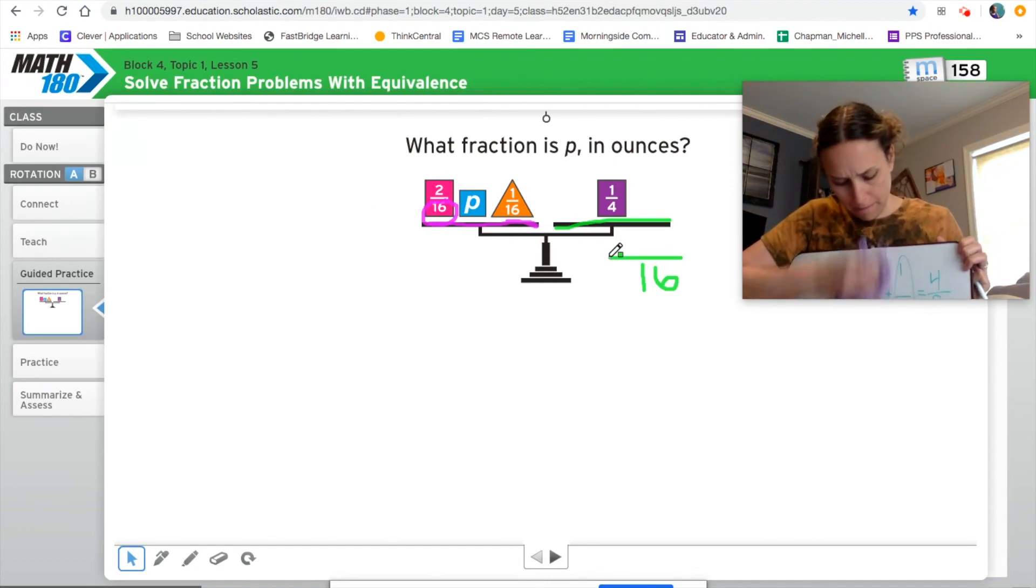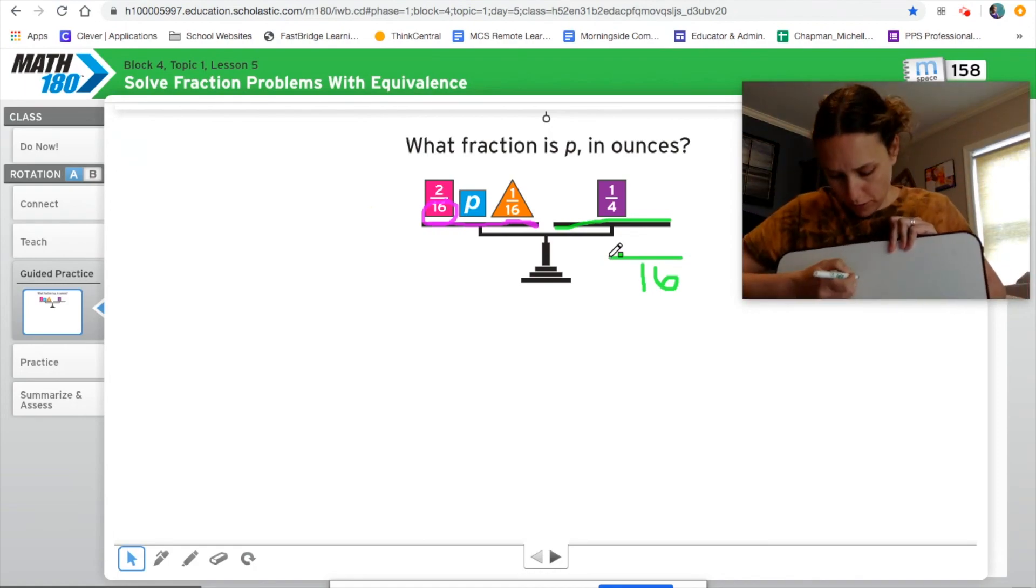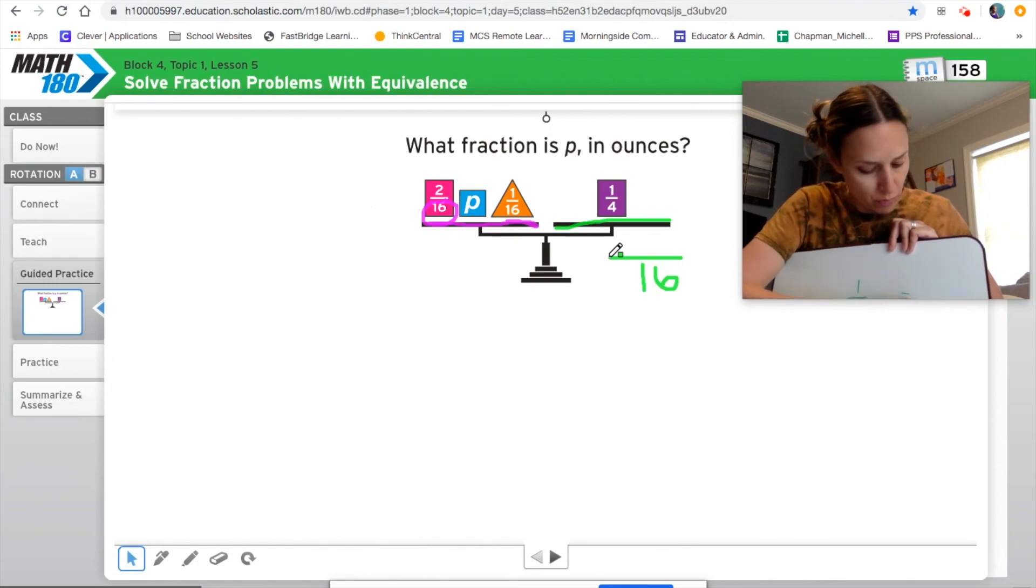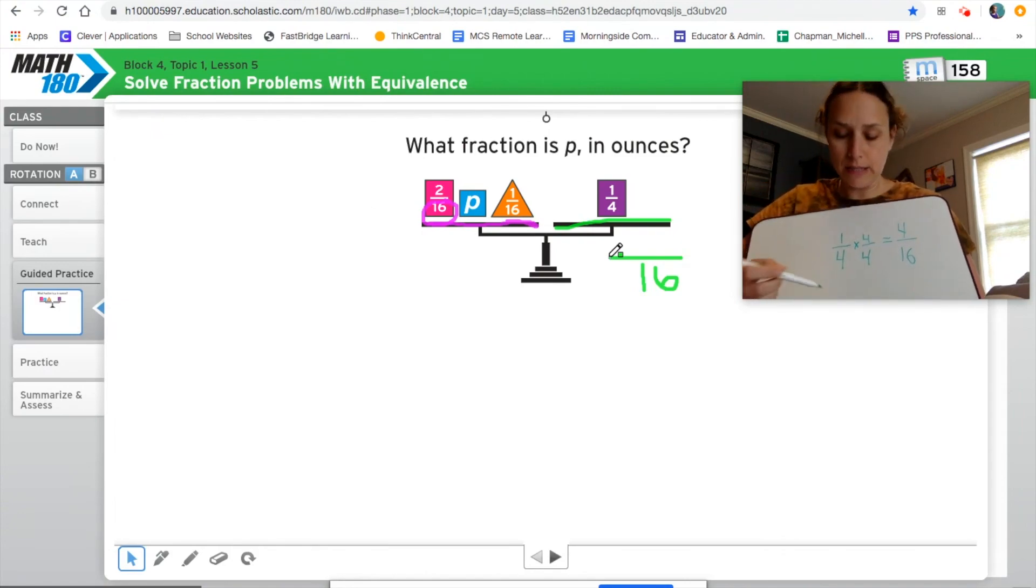So I come back to my board here. I'm going to take my one-fourth. I think we've done one-fourth to sixteenths before. I think we've done this a couple times now. So one-fourth times four over four gives me four-sixteenths. So if I know that it's four-sixteenths and I look back here, I've got two plus one is three. Three plus what is going to give me four?